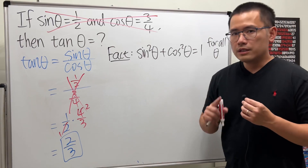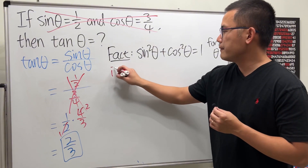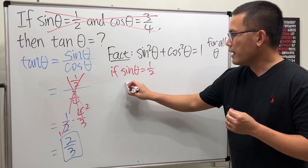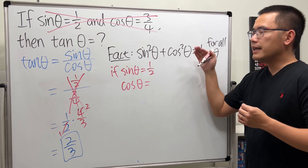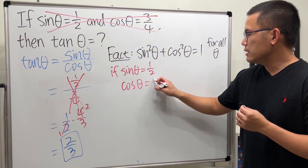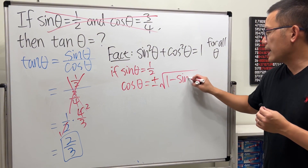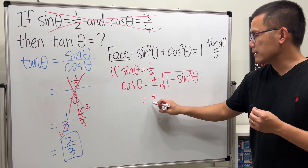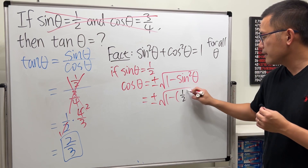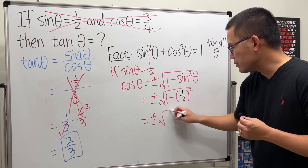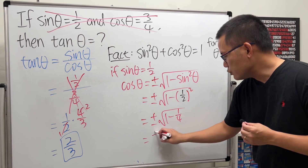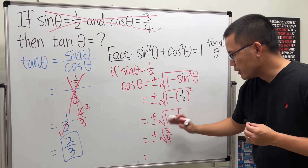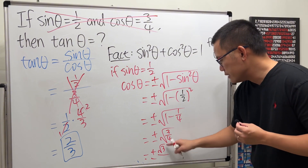So what can you do? Here's the deal. If we want to say sin θ = 1/2, then we can solve for cos θ from the Pythagorean identity. Cosine θ will be — put sin²θ to the other side, take the square root, and don't forget the plus or minus — plus or minus √(1 − sin²θ). Plugging in 1/2, we get ±√(1 − 1/4), which is ±√(3/4). Taking the square root on top and bottom gives ±√3 over 2.